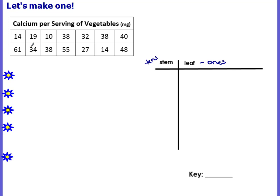The smallest stem — looking at the tens place — is going to be a one. You want to order all of the leaves from least to greatest that have the stem of one. So here we have fourteen, so there's a four. Here's a nineteen, here's a zero, so that's the smallest.